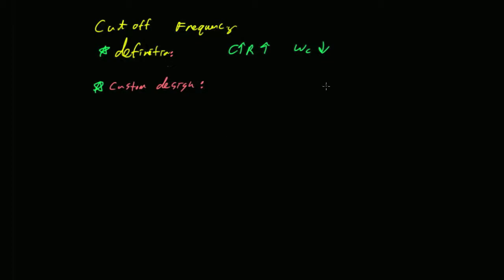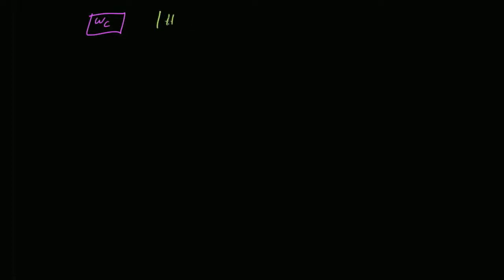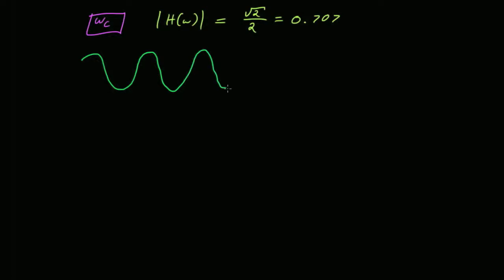By definition, the cutoff frequency is defined as that frequency which makes the magnitude of the transfer function equal to root 2 over 2, which is about 0.707. It turns out that if you take a cosine—let's say your original cosine has amplitude plus or minus 1—and you measure the power in that cosine, the average power over one period is a specific value.